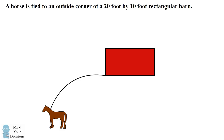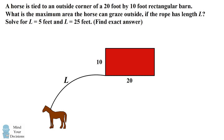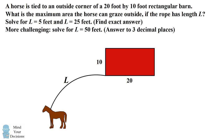Hey, this is Presh Talwalkar. A horse is tied to an outside corner of a 20 foot by 10 foot rectangular barn. What is the maximum area the horse can graze outside the barn if the rope has length L? Solve for the cases of L equals 5 feet and L equals 25 feet. You should find the exact answer. If you are up for a challenge, solve for the case of L equals 50 feet. You can solve for the answer to three decimal places. Can you figure it out? Give this problem a try and when you're ready keep watching the video for the solution.